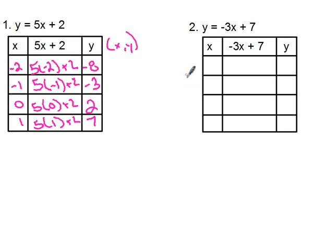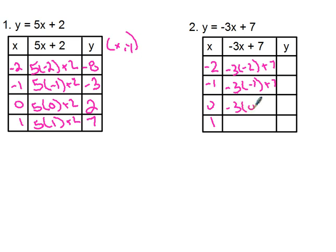For the next example I'll choose negative two, negative one, zero, one, and two. The equation column gives: negative three times negative two plus seven, negative three times negative one plus seven, negative three times zero plus seven, and negative three times one plus seven. Solving those: thirteen, ten, seven, and four.